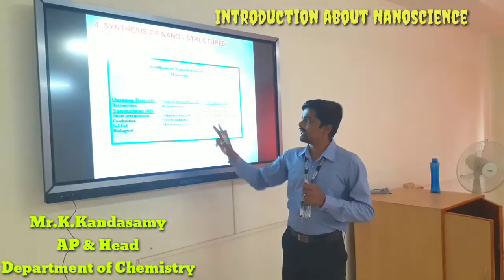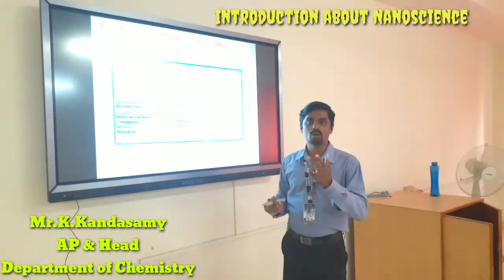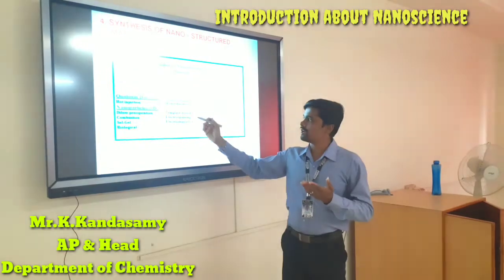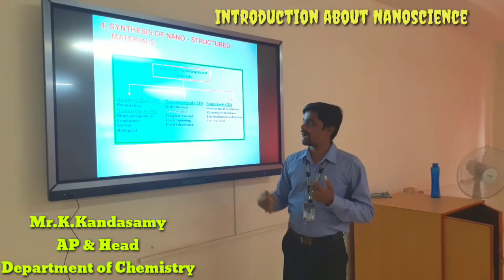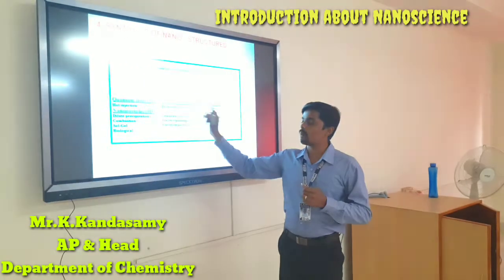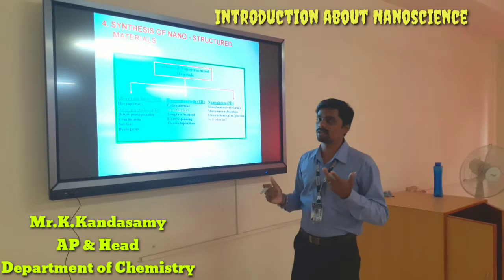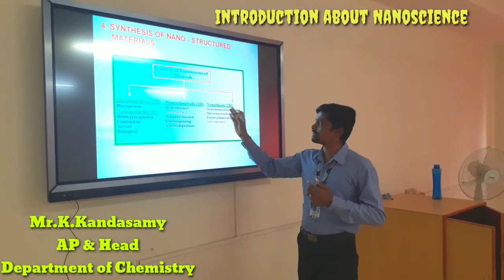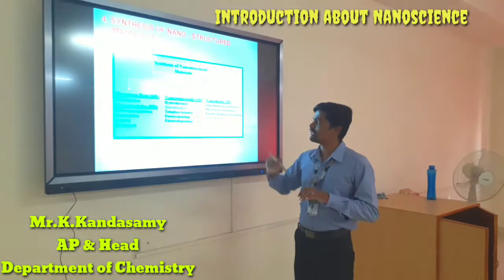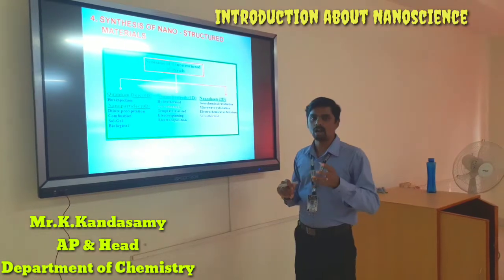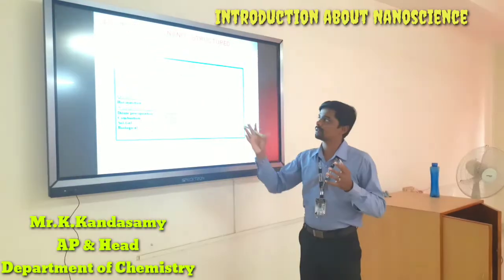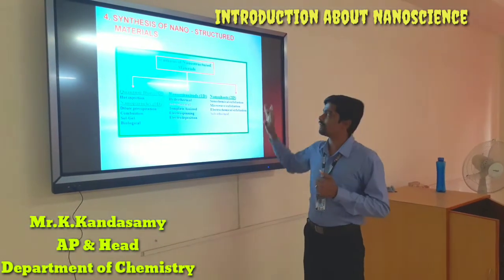For one-dimensional materials — if we want to synthesize nanowires, that is one-dimensional — we go for hydrothermal, solvothermal, template-assisted, and electrochemical methods. These are very important methods for one-dimensional nanowires or nanorods. And if we want to synthesize nanosheets — two-dimensional structures — we go for sol-chemical, microwave, electrochemical, and solvothermal methods. These are the methods for two-dimensional nanomaterials, and these are the types of synthesis of our nanomaterials.